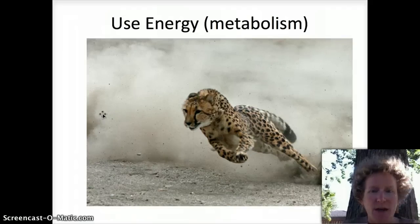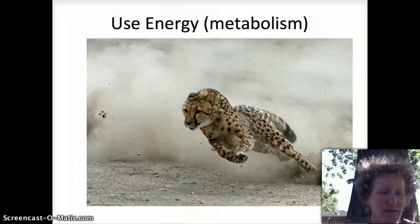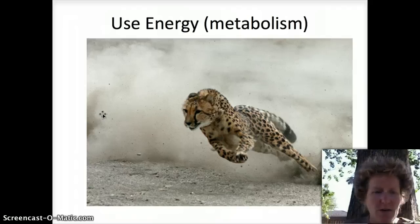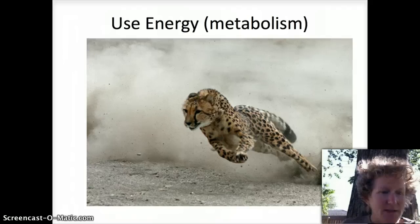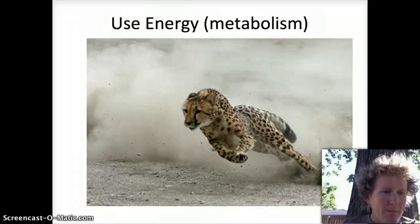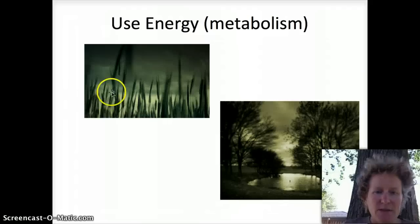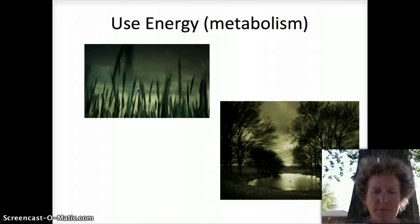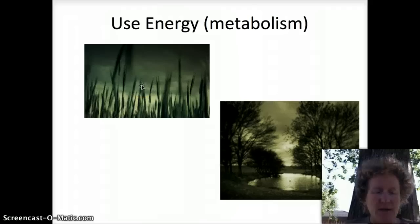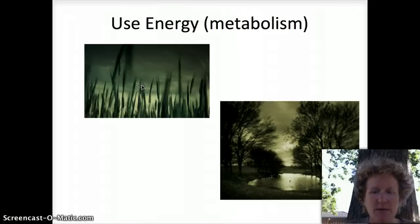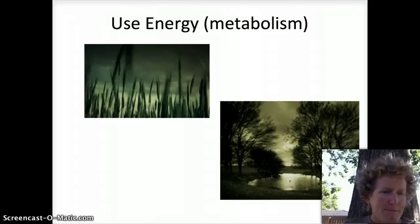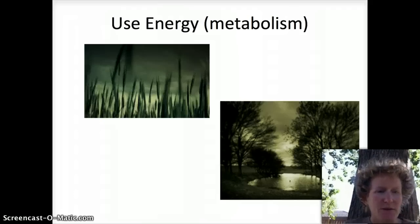Living things also use energy — they metabolize glucose and other molecules. This cheetah is metabolizing a lot. Plants also metabolize the glucose they produce in photosynthesis. If they're in the dark especially, they're not making any glucose — they're just using it, so they metabolize their own glucose and break it down for energy.